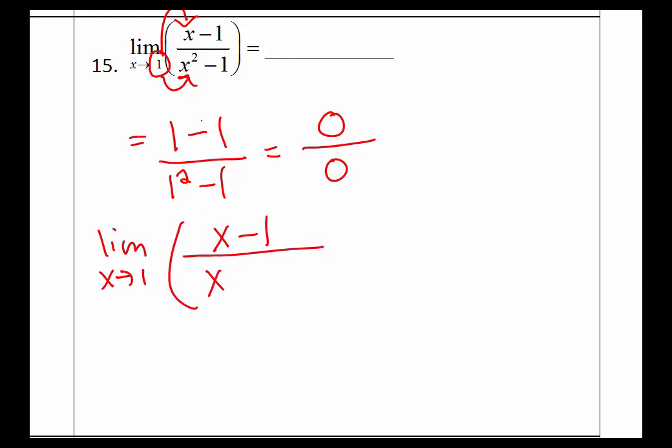The denominator factors as x squared minus 1, or x minus 1 times x plus 1. It's our difference of squares.